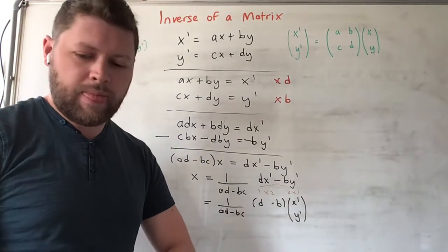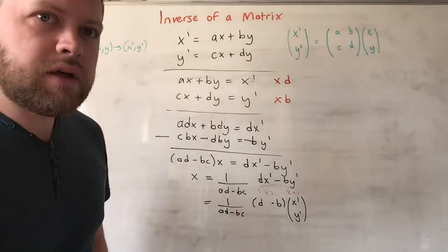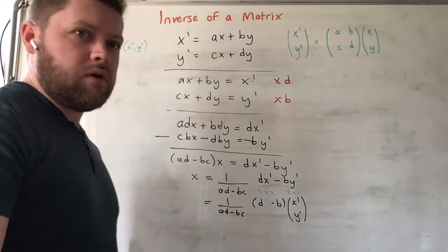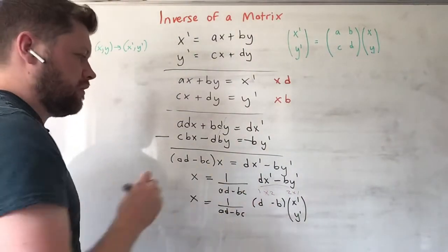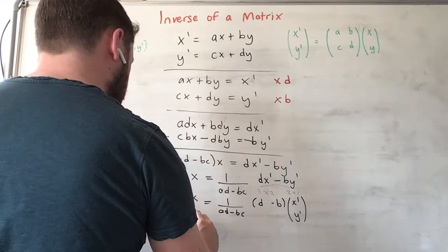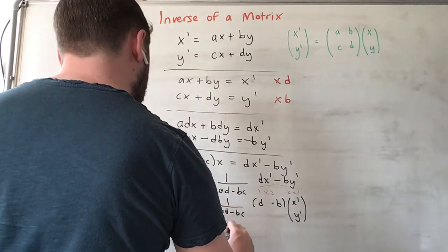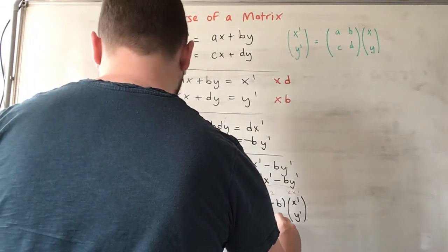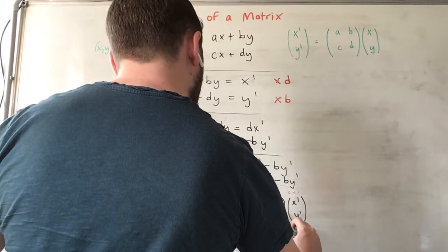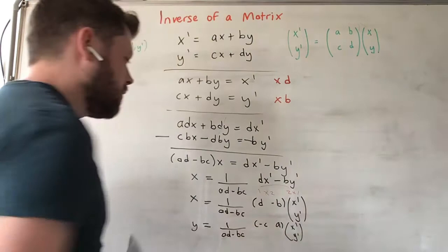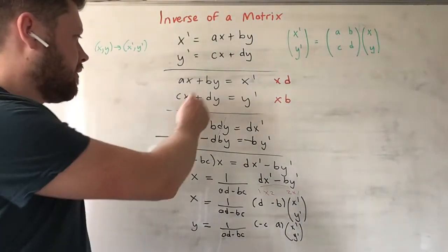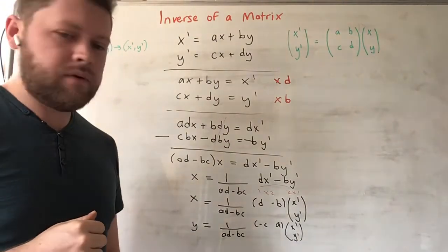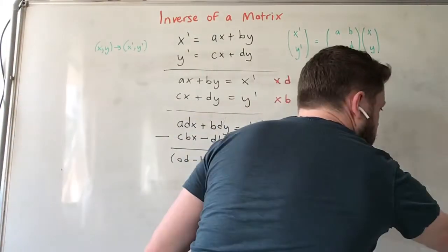We can go through the exact same process and find y. So this is x equals that, we can do the same process and find y. What you get is y = 1 over (ad - bc) times (-c, a) times (x', y'). That's what you would do if you went through the same process and canceled the x's rather than the y's and worked out an expression for y.